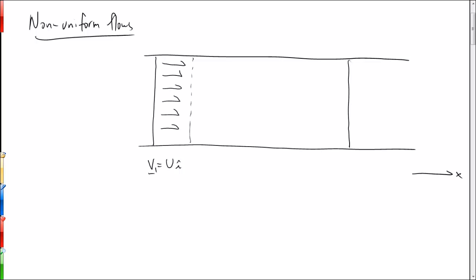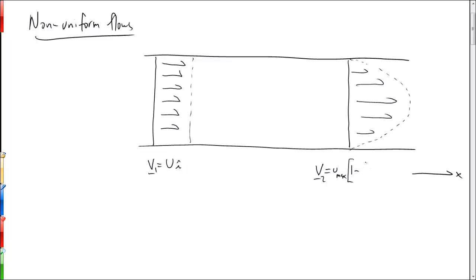At some section farther downstream, this profile — we'll discuss in later chapters why it becomes fully developed, but basically viscous forces make this profile become parabolic in nature. It's equal to u_max times one minus the quantity (r/R)², where little r is measured from the centerline of the pipe and big R is the pipe radius.